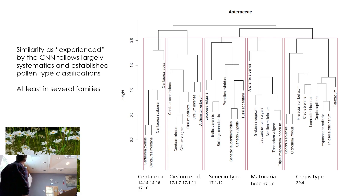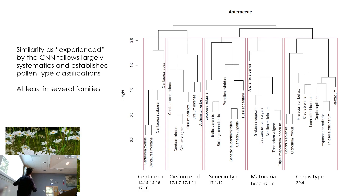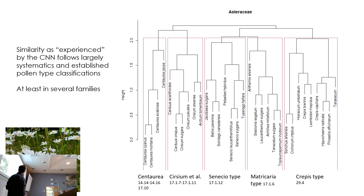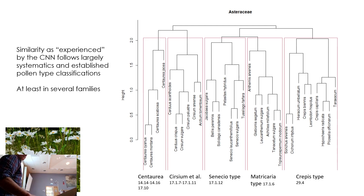For example, the Asteraceae looks quite structured, where species group nicely into categories. You can see the difference between these categories, and they follow quite nicely the groupings in that German key — things called 14.14 or 17.10, that kind of notation. So for Asteraceae, that's clearly the case.